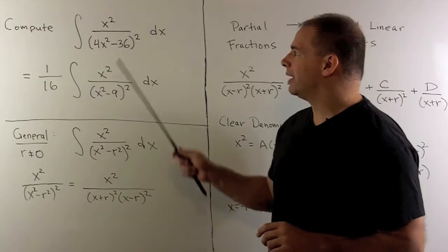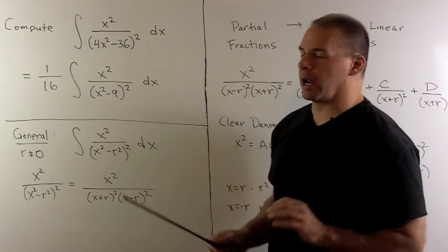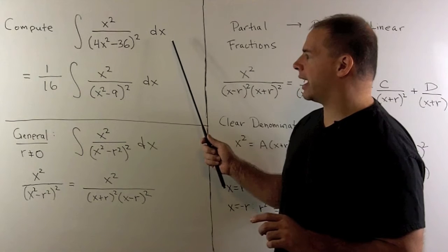Let's compute the indefinite integral: x squared over 4x squared minus 36, quantity squared, with respect to x.